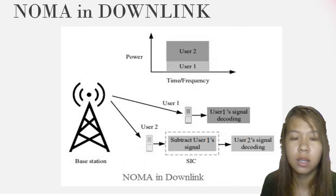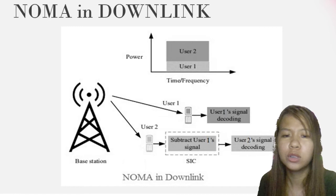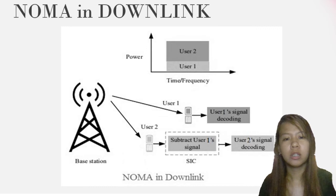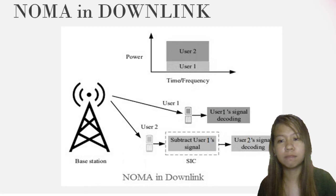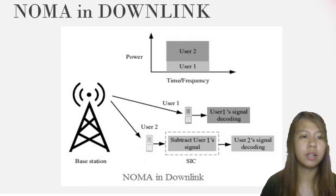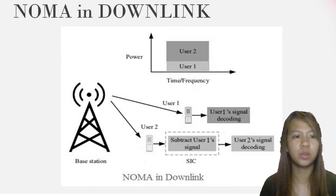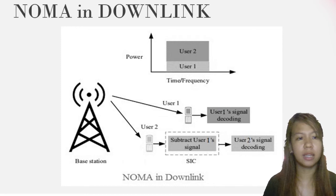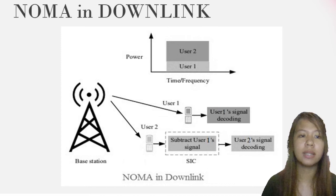User 1's signal is decoded directly, while user 2 subtracts user 1's signal before decoding its own. In NOMA downlink, the base station superimposes the information waveforms for all served users. Each user equipment employs SIC to detect their own signal. The figure shows a base station and K number of UEs with SIC receivers, where UE1 is the closest to the base station and UK is the farthest.